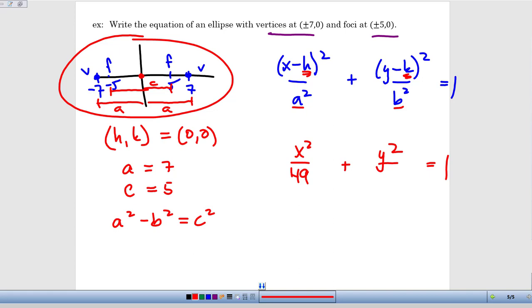If I plug in a is 7, I get 49. 49 minus b squared equals c squared is going to be 25. Now if I add b squared to both sides and at the same time subtract 25 from both sides, I've got b squared is equal to 49 minus 25, or 24. I don't even need to figure out what b is, I just need to know what b squared equals, since that's what goes into the equation, so I can fill that in right here.